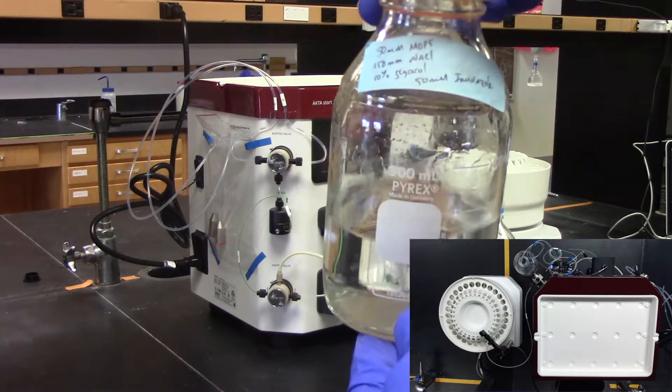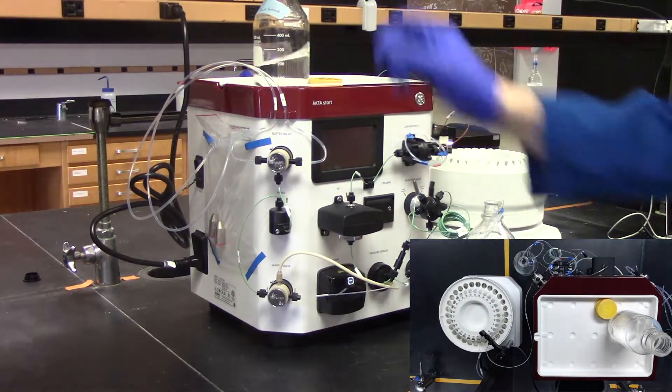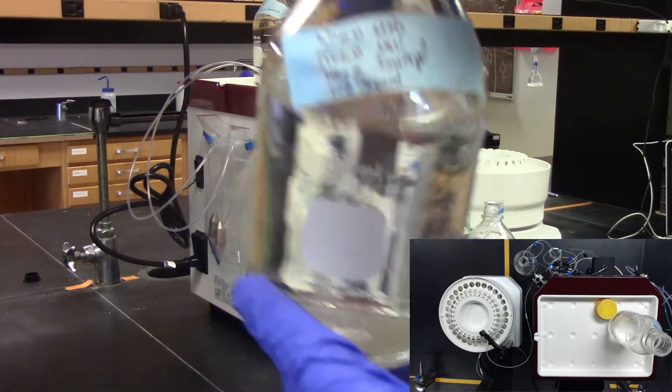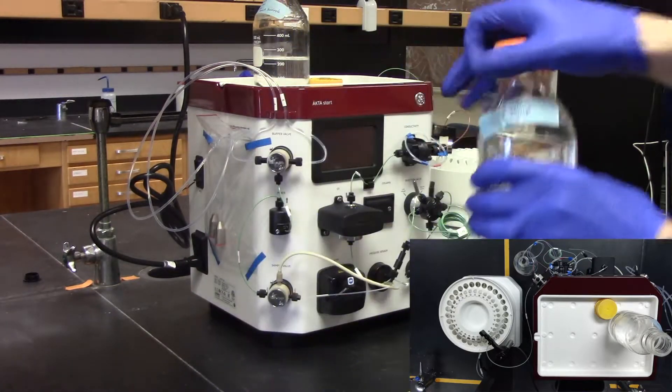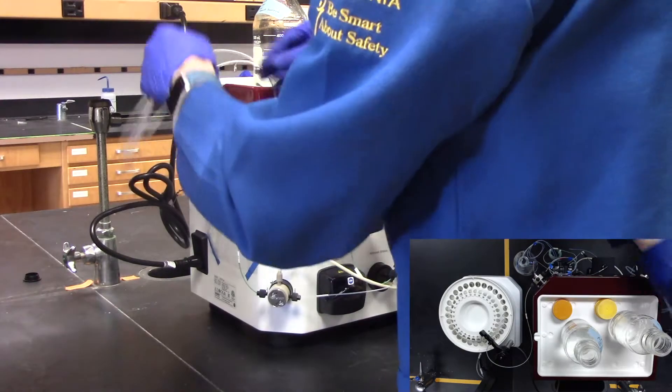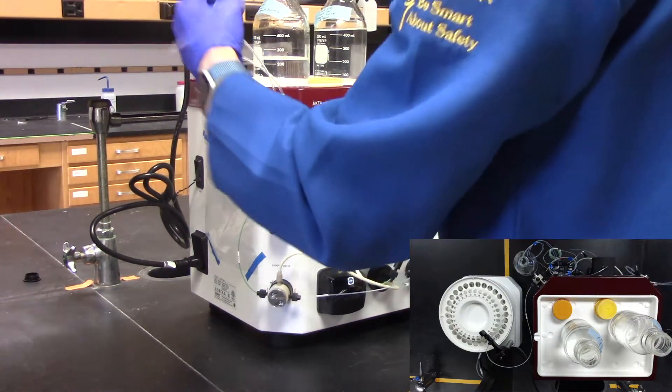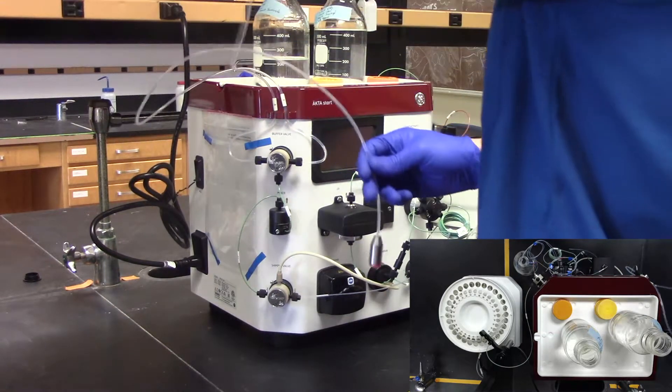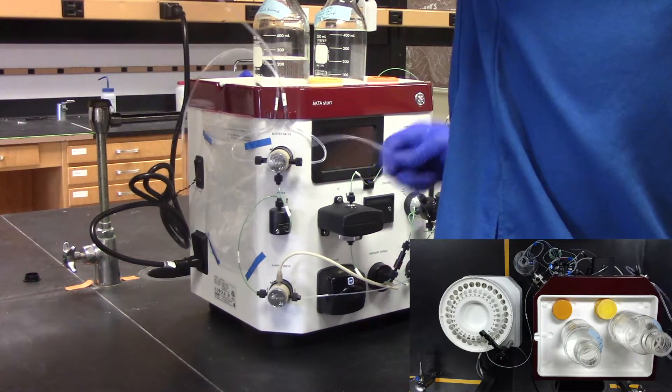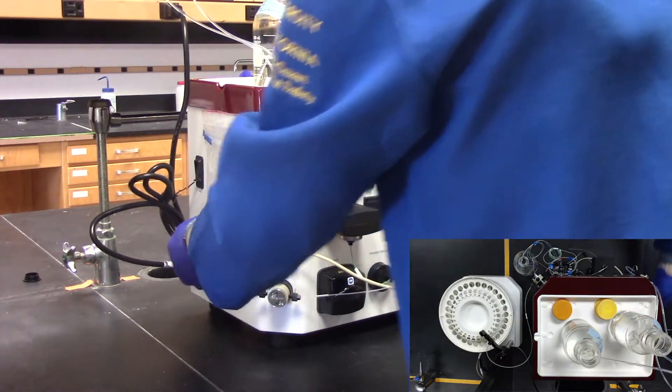We now need to prepare the FPLC. To begin with, place your lysis buffer and your elution buffer on top of the FPLC. Insert your A line into the lysis buffer and B line into the elution buffer. Turn on the FPLC.